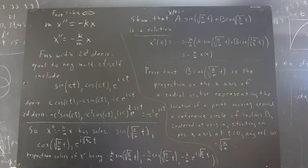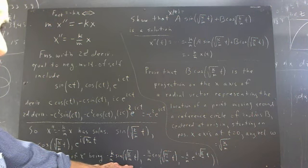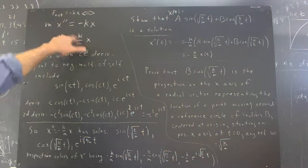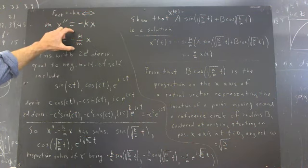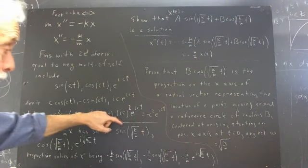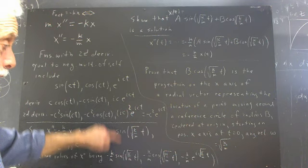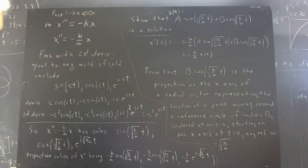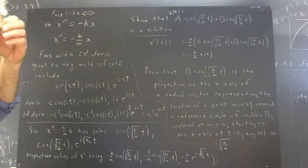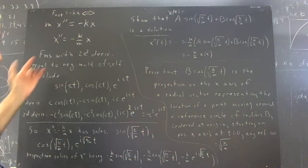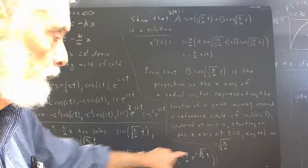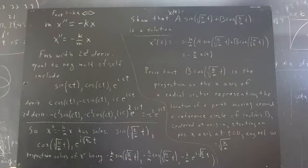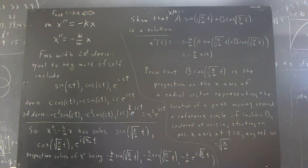Okay, and then it's very clear then that x double prime, which would be this, is negative k over m times x, which would be negative k over m times this. This second derivative and this function plugged in here give you an identity. You get negative k over m times the sine of the square root of k over mt on both sides. Similarly here and here. So you should plug those in, verify for yourself that those are solutions.